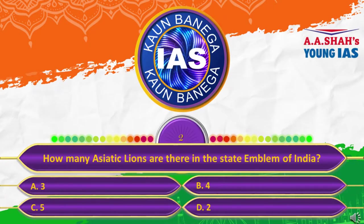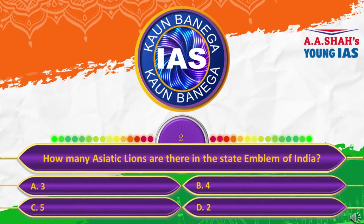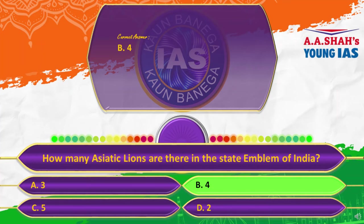The next question: How many Asiatic lions are there in the state emblem of India? A, three; B, four; C, five; or D, two? The correct answer is four. If you look at the state emblem of India, you would see three in the front, but there is one more which is hidden, which is behind. So there are in all four Asiatic lions.